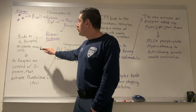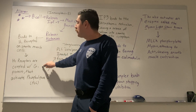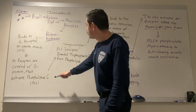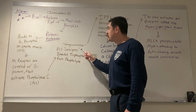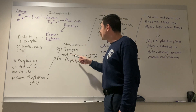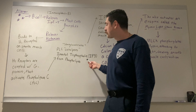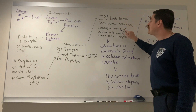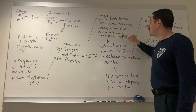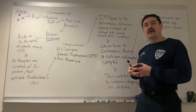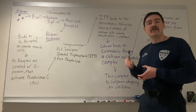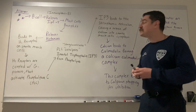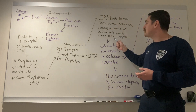Histamines bind to the H1 receptors on smooth muscle cells. The H1 receptors are coupled with G proteins that activate phospholipase C, also known as PLC. PLC catalyzes inositol triphosphate, or IP3, from phospholipids. IP3 binds to the sarcoplasmic reticulum, causing a release of calcium into the smooth muscle cells' cytoplasm. The sarcoplasmic reticulum is what contains most of your calcium — it can release or reuptake calcium depending on the muscle's needs. In this case, it's releasing calcium into the smooth muscle cells' cytoplasm.